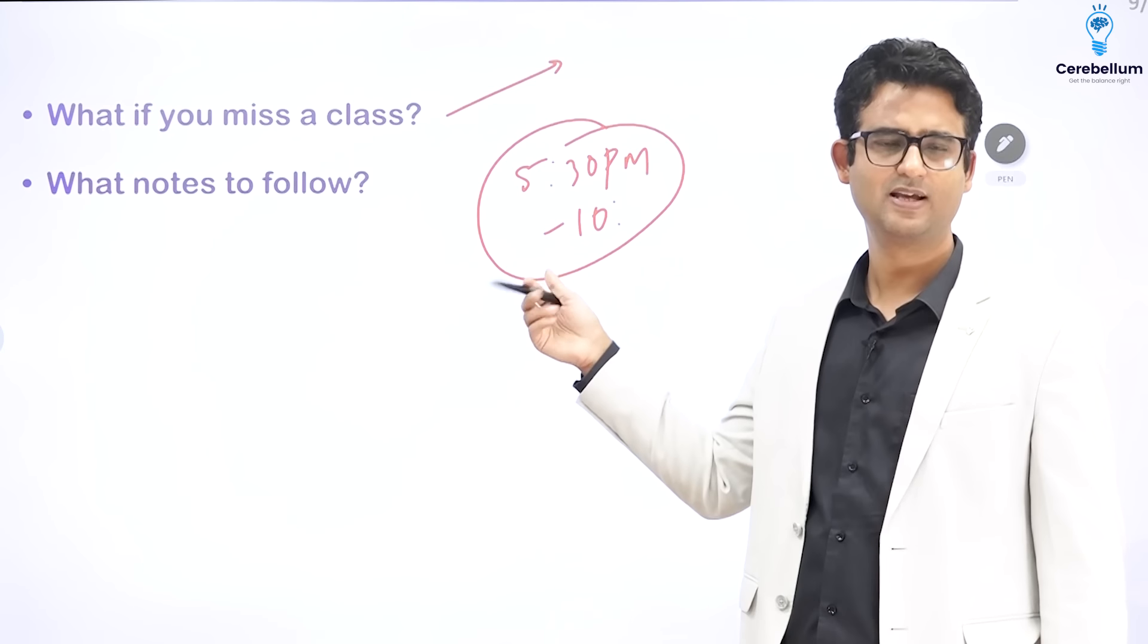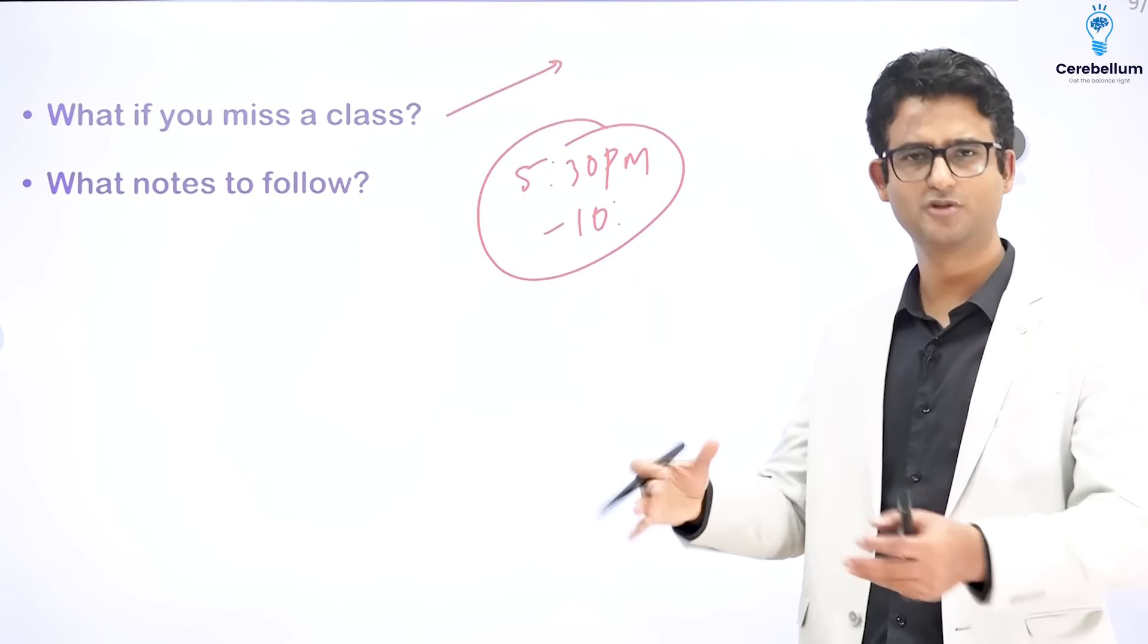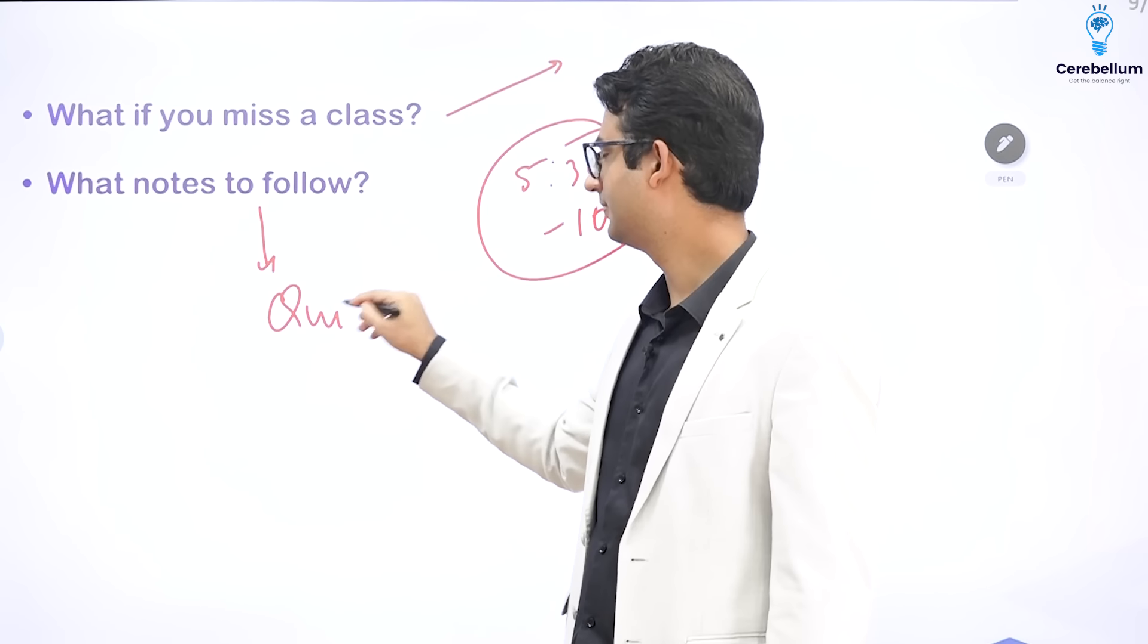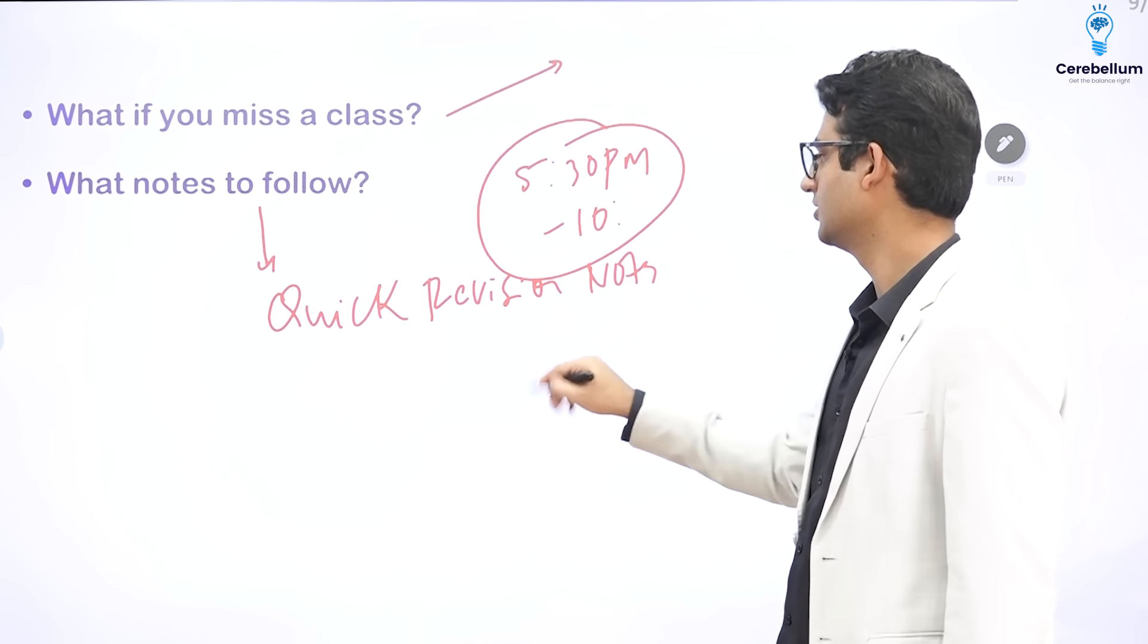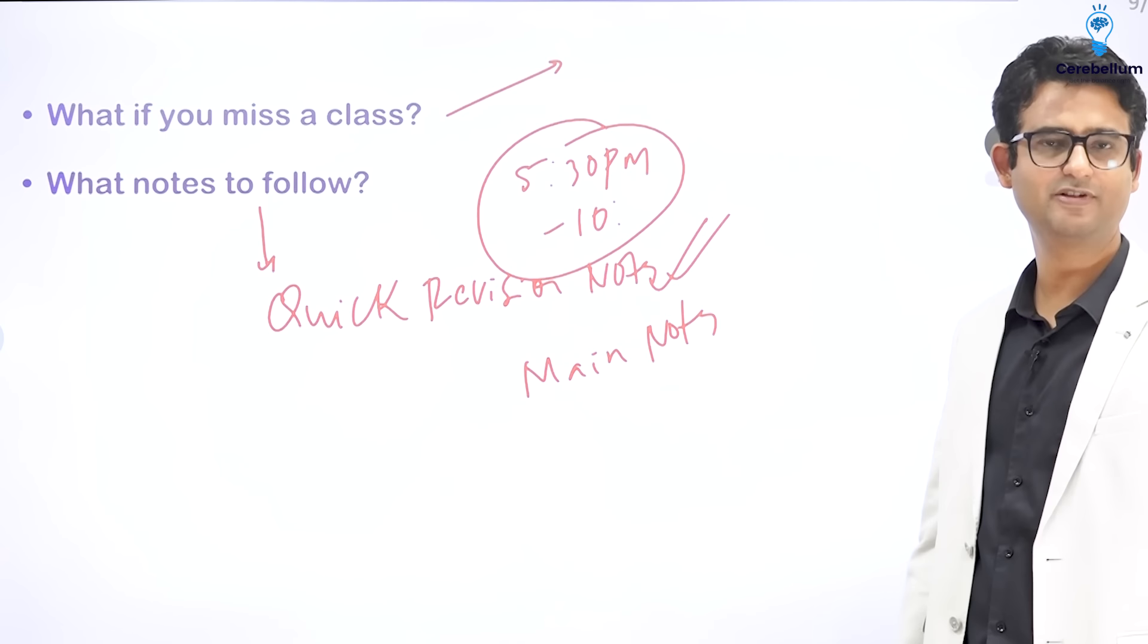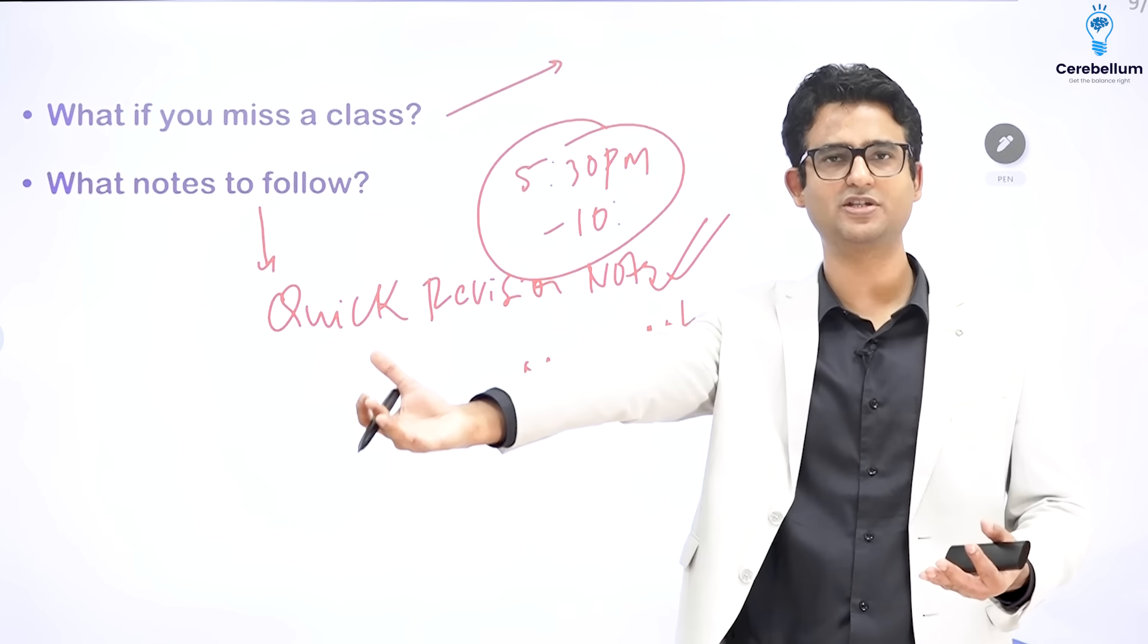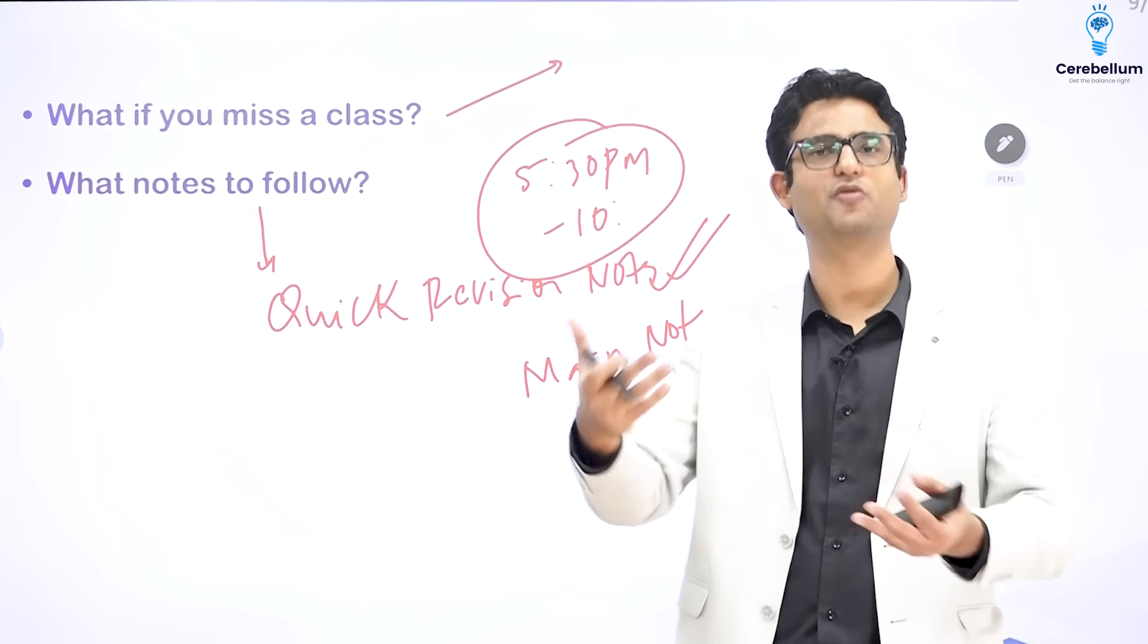What is the schedule of these classes? The classes start at 5.30 PM and they usually continue till 10 PM or 10.30 PM, depending upon what needs to be covered. Which notes to follow? So we have got two types of notes. We have got quick revision notes and we have got main notes. So the live lectures usually sync better with the quick revision notes. And it is a good practice to have quick revision notes in front of you and listen to what teacher is saying and make additions in that quick revision notes. So that you have a one book that you can follow for revision. Alright.